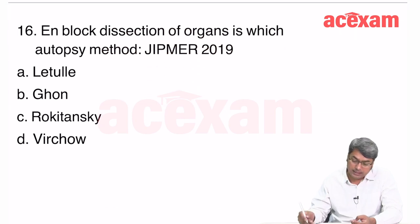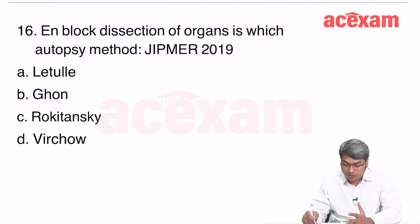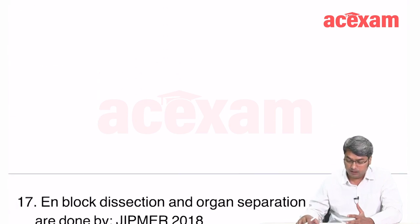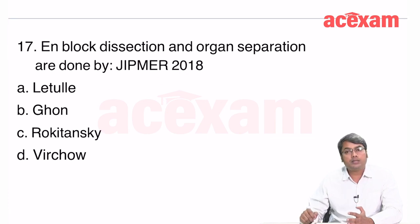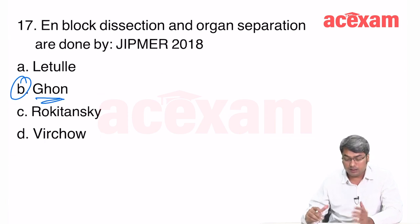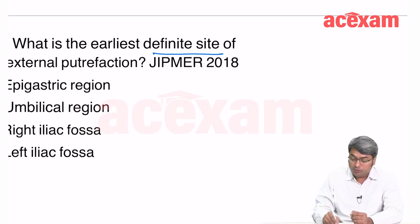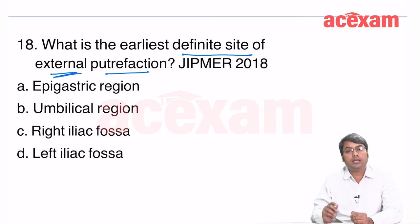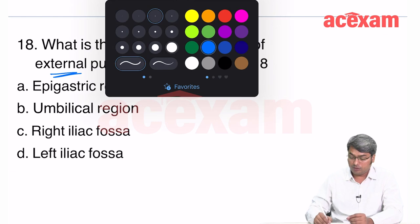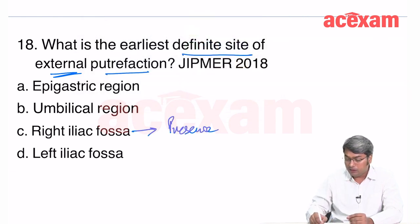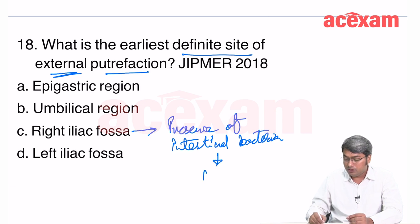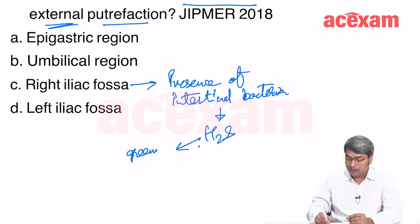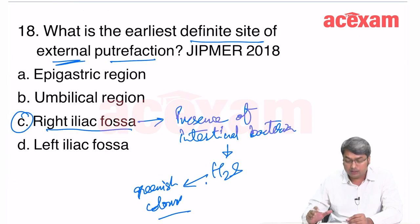En-block dissection is Gons method — repeated in JIPMER 2018 as well. The earliest definite site of external putrefaction is the right iliac fossa, due to the presence of intestinal bacteria that produce H₂S, giving the characteristic greenish color first visible in that region.